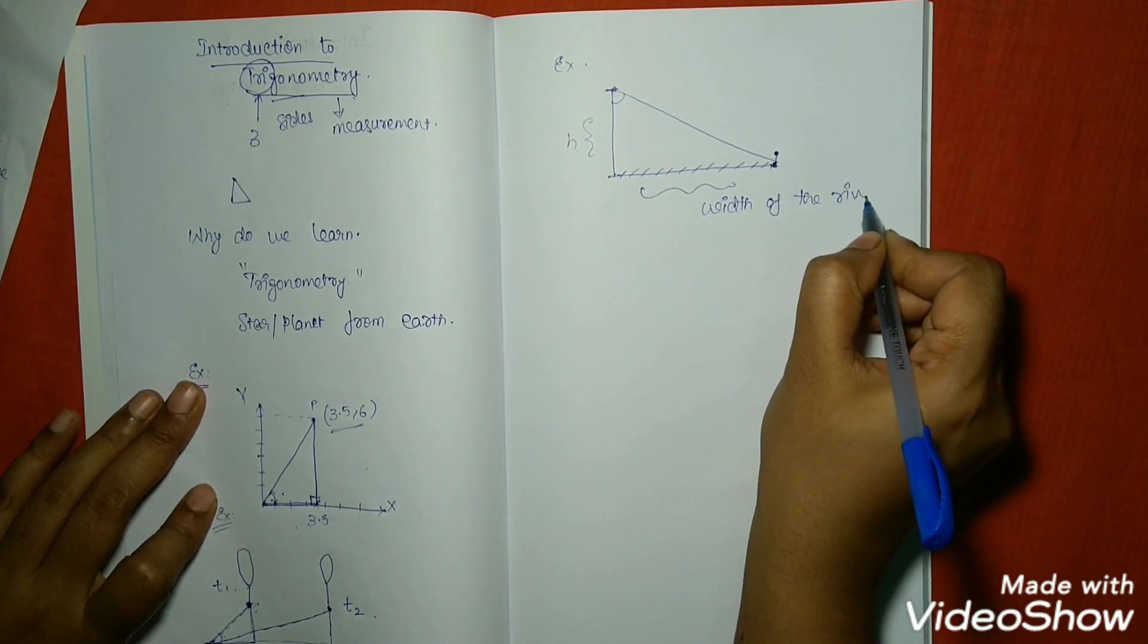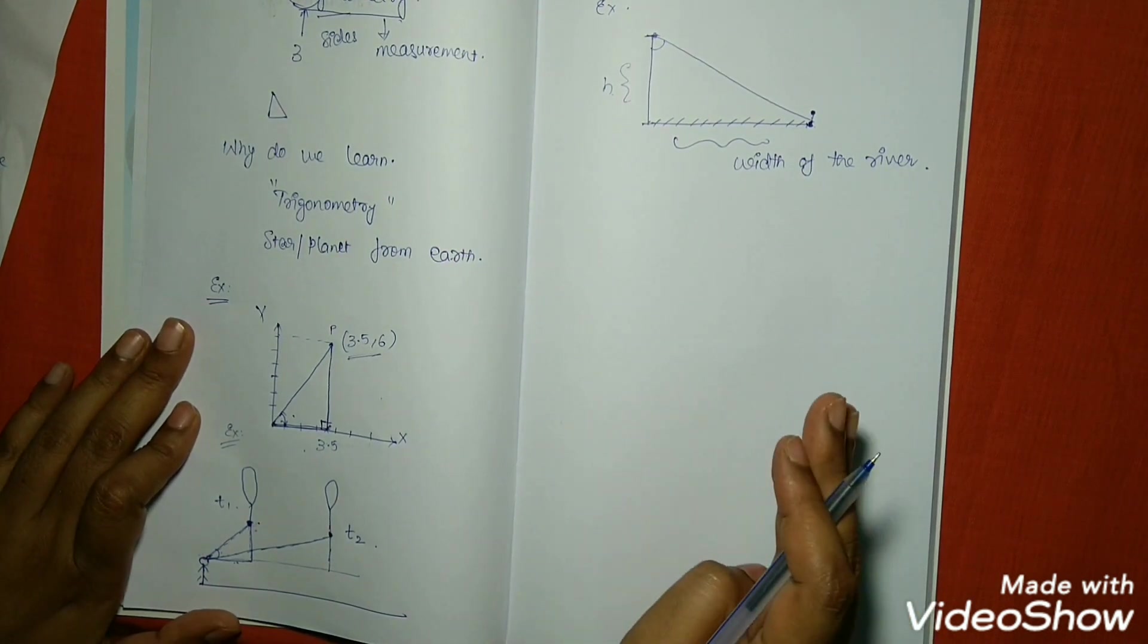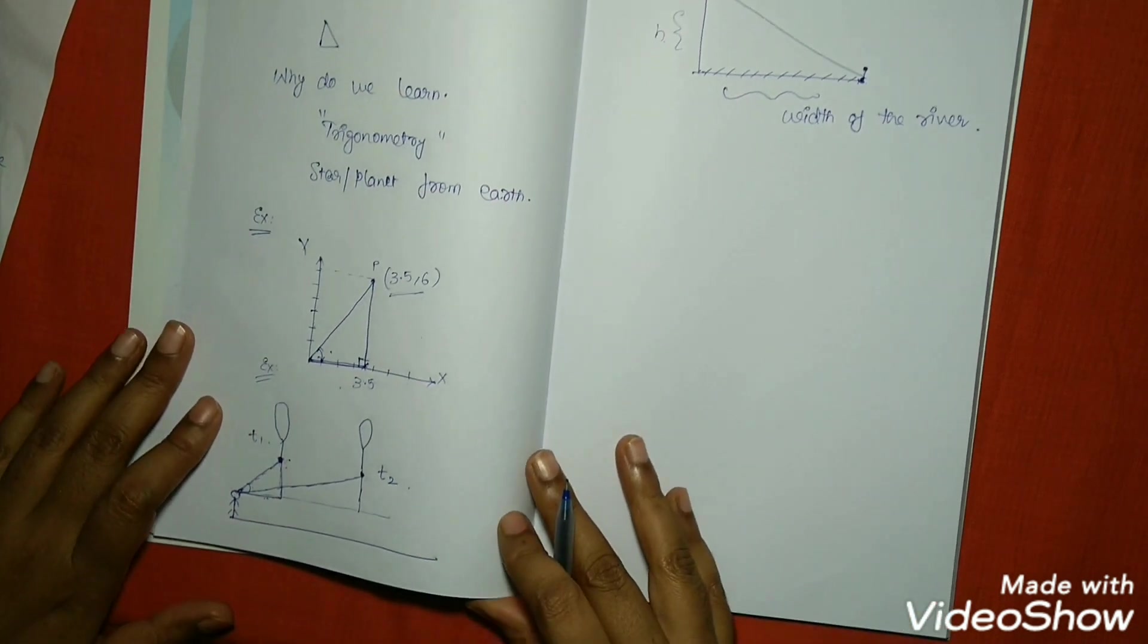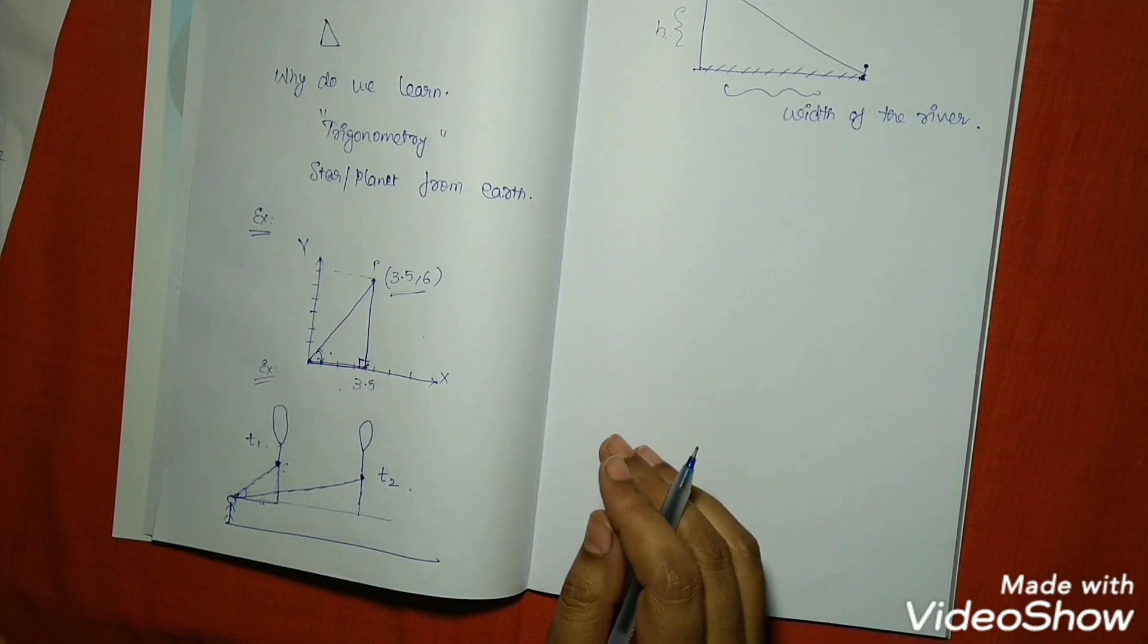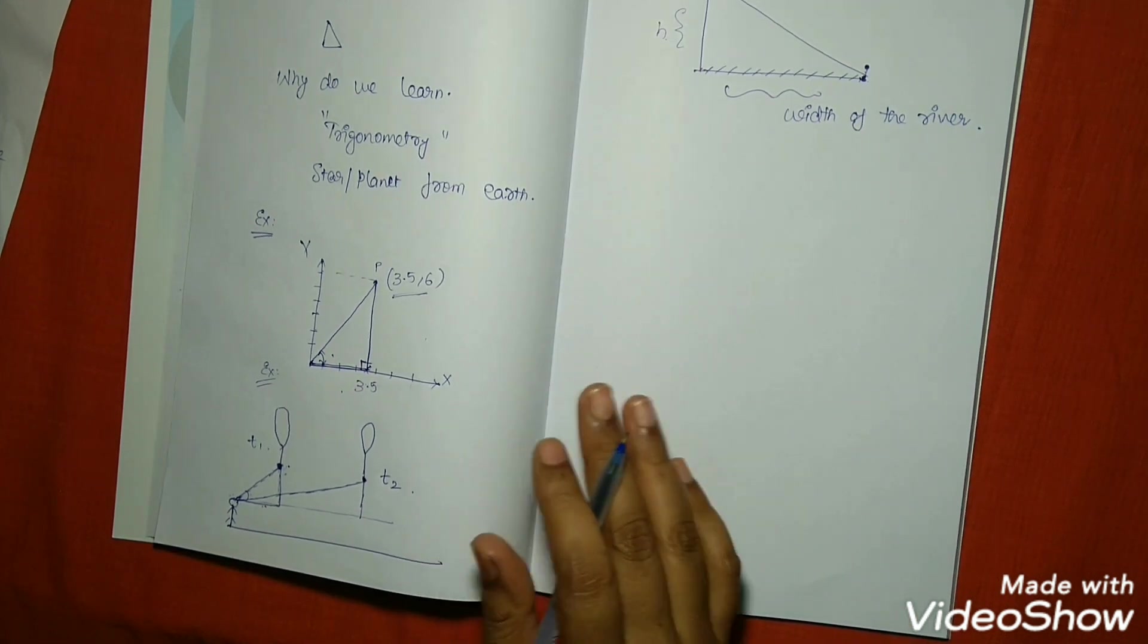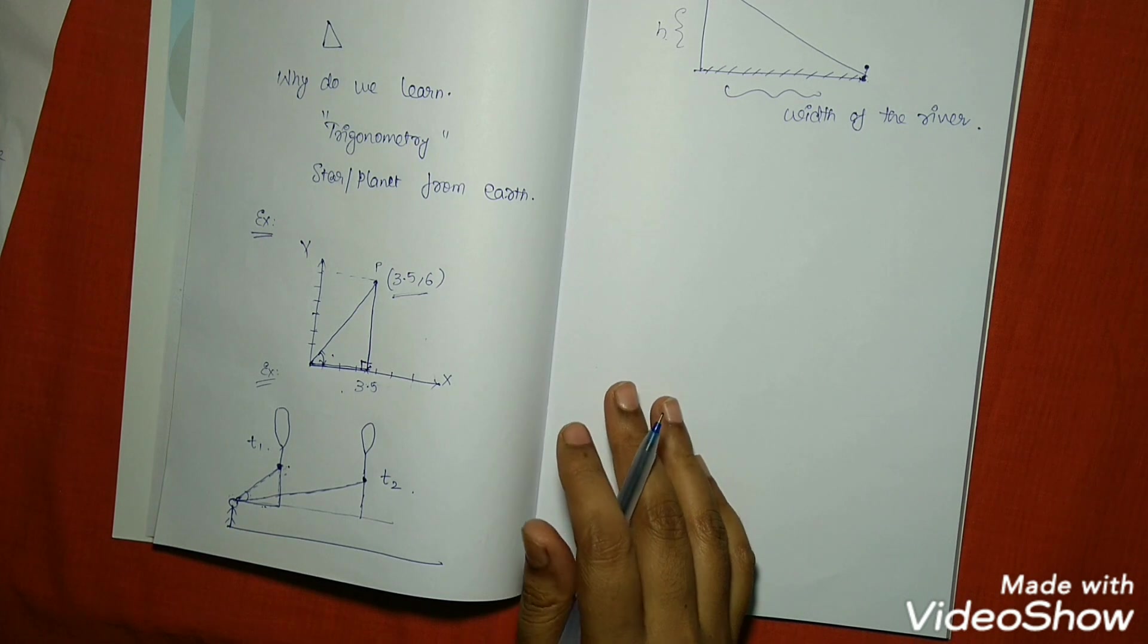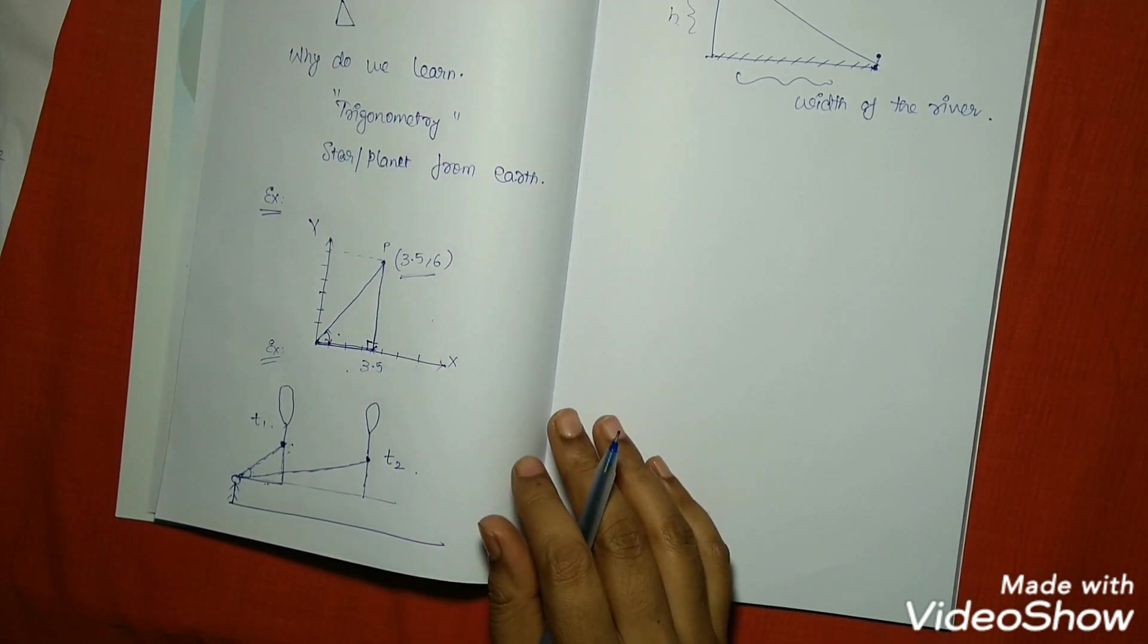To find out the width of the river, to find out the movement of a cloud or an aeroplane at what speed it is moving, or a hot air balloon, all these things can be understood clearly from trigonometry. This is the introduction to trigonometry and where we are using trigonometry in our day-to-day life.